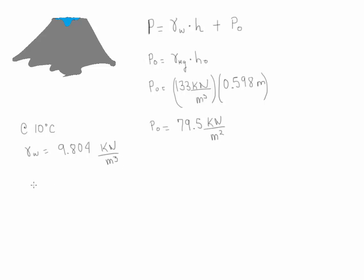So now let's calculate the pressure at the bottom of the lake, which is at 40 meters. So we're going to have P is going to be equal to 9.804 kilonewtons per meter cubed times the depth, which is 40 meters, plus 79.5 kilonewtons per meter squared.